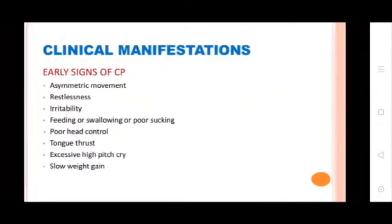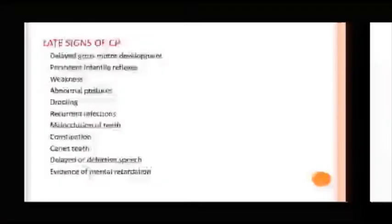Clinical manifestations: Early signs of CP include asymmetric movement, restlessness, irritability, feeding difficulties or poor sucking, poor head control, tongue thrust, excessive high-pitched cry, and slow weight gain. Late signs include delayed gross motor development, persistent infantile reflexes, weakness, abnormal posture, drooling, recurrent infections, malocclusion of teeth, and constipation.